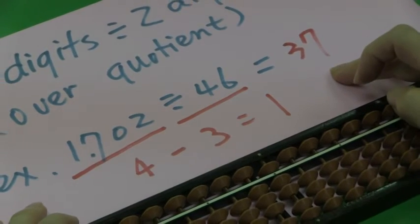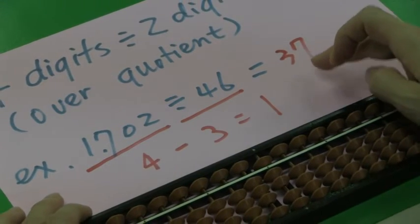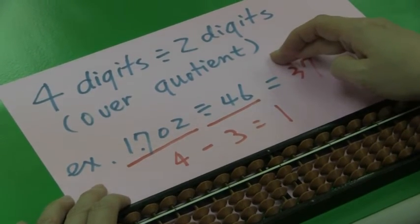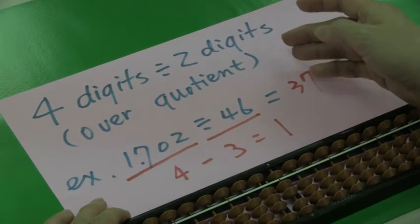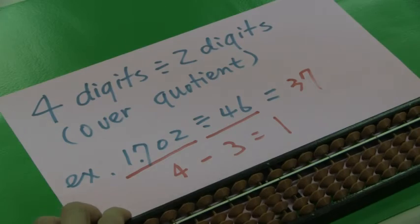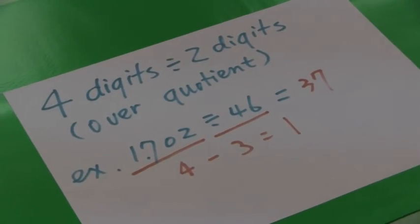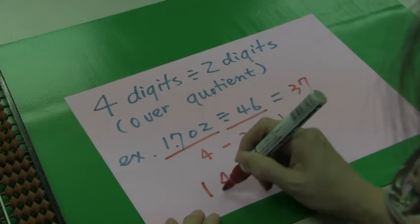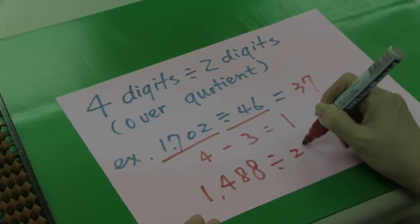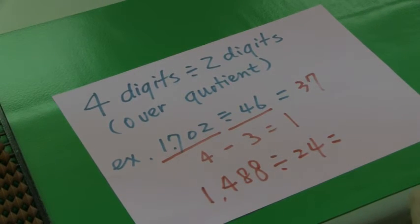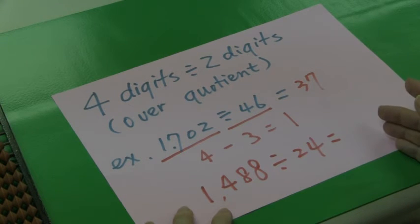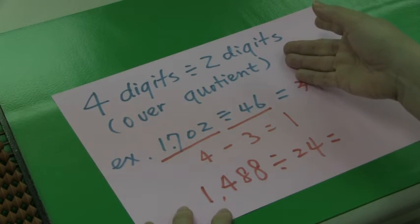Now, you have learned the question, division question, 4 digits divided by 2 digits with over-quotient problem. You now know the skill, how to use it. If you like, you can try this question at home. 1,488 divided by 24. This question has over-quotient in it. Try it and make sure you know how to use over-quotient skill. Thank you.